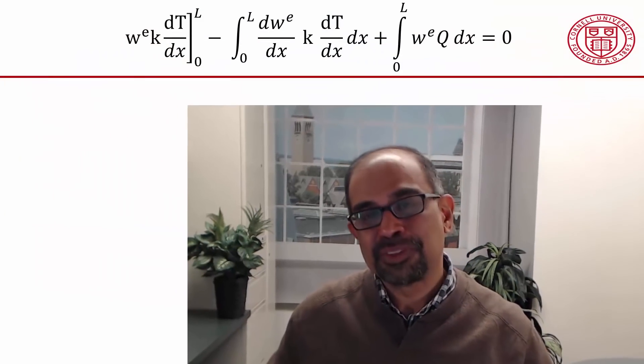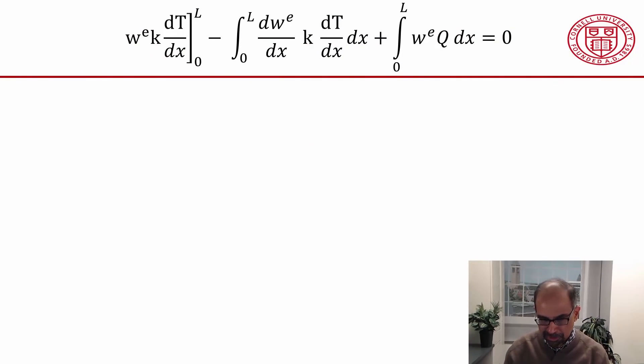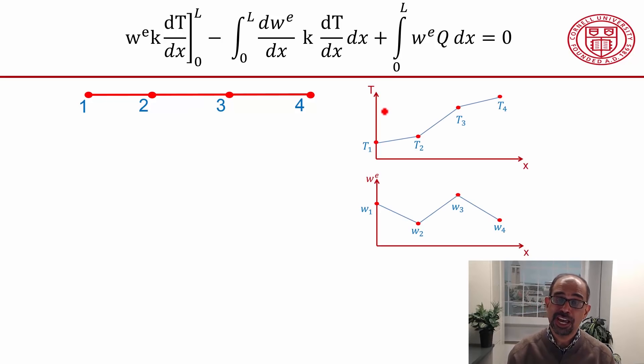We have our weak form, which is over here, and we have our domain divided into three elements. You can think of each element as a segment of the domain, and we have the assumed shapes for the temperature and for the weighting function, and we want to satisfy this equation for these shapes.